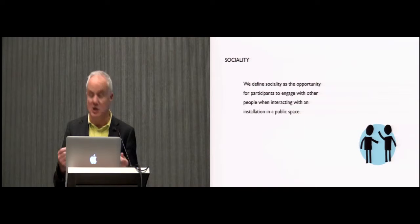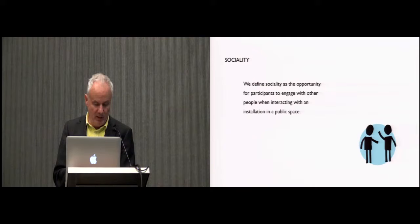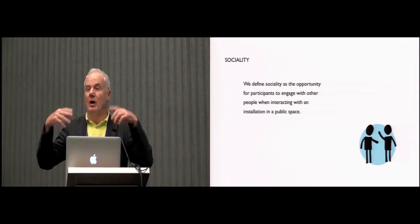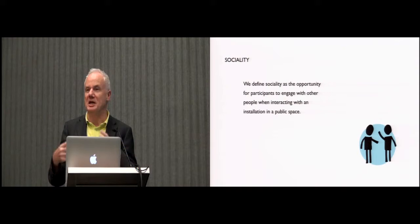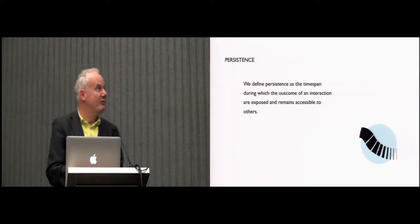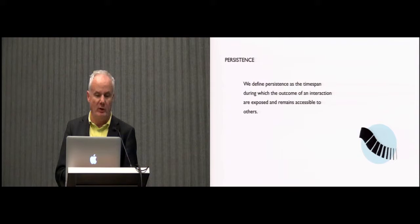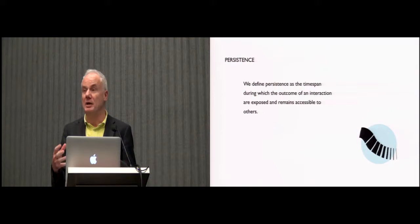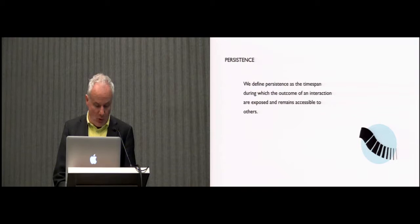Sociality — perhaps the most obvious one. We define sociality as the opportunities for people to engage with other people when interacting with an installation. An example of low sociality is the bike counter. Another famous example of participation is the Blink the Light installation, where you can control a paddle on a large building and play ping pong — it would be hard to imagine this as not a social kind of interaction. Last of the five concepts is persistence. We define persistence as the time span during which the outcomes of an interaction are exposed and remain accessible to others. Some kinds of participation are instantaneous; others are registered, saved, and made available beyond the single moment of interaction.